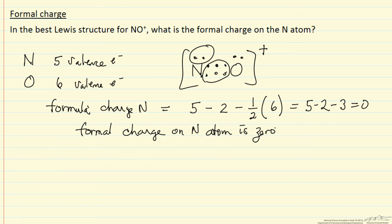And then we should also calculate to check if this is consistent, the formal charge for the oxygen atom. So valence electrons 6, lone pair electrons 2, and then minus one half the 6 shared electrons. So this is 6 minus 2 minus 3. Formal charge on oxygen is +1.